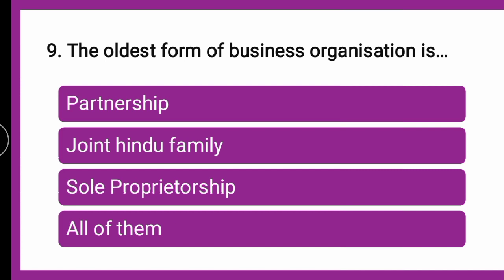Next question: The oldest form of business organization is DASH — whether partnership, Joint Hindu Family, sole proprietorship, or all of them. The correct answer is sole proprietorship. The oldest form of business organization is sole proprietorship.